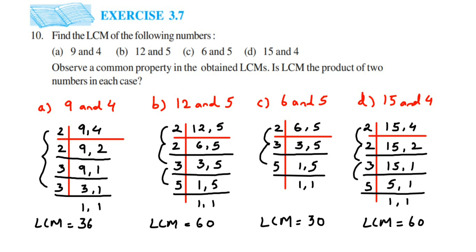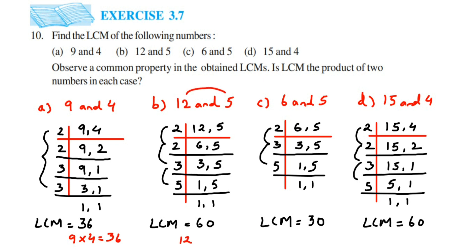Now we've found all the LCMs. The question asks us to observe a common property: is the LCM the product of the two numbers in each case? In the first case, LCM is 36, and 9×4=36 — yes, correct. For 12 and 5: 12×5=60 — correct. For 6 and 5: 6×5=30 — correct. For 15 and 4: 15×4=60 — correct. So we can observe that for these given pairs, multiplying the two numbers gives the same result as their LCM.